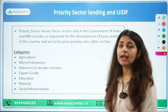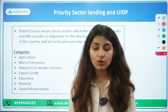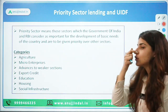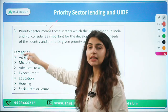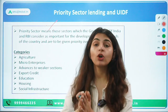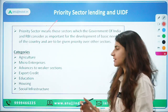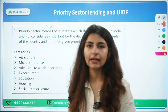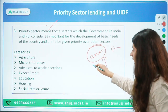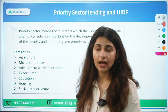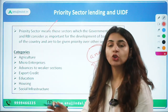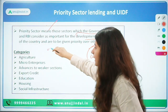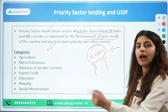The first topic today is Urban Infrastructure Development Fund, but first we will understand Priority Sector Lending. The government along with RBI wants banks to contribute towards certain sectors and areas in the economy - sectors where they have given priority so that banks invest and give loans to these areas. These sectors have priority because they are important for the development of basic needs of the country.